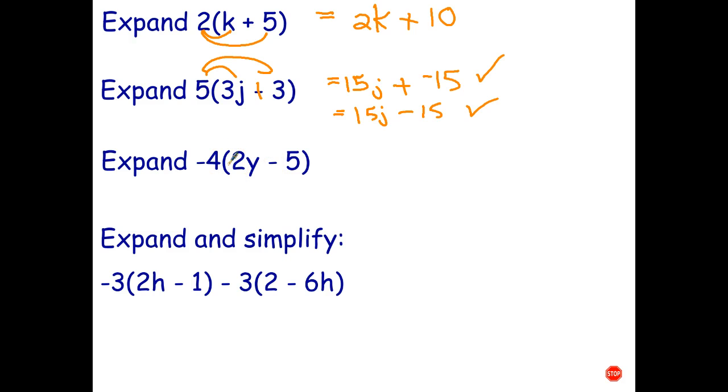Okay, this is where students can run into difficulty when you've got a negative and a subtraction, which is why for this question, I'd strongly suggest you change that to a plus negative. Put the little arcs in to remind you to multiply that by each of the terms inside the brackets. Negative 4 times 2y is negative 8y. And plus, negative 4 times negative 5 is positive 20. So, the answer is negative 8y plus 20.